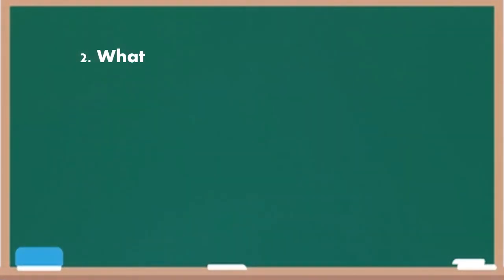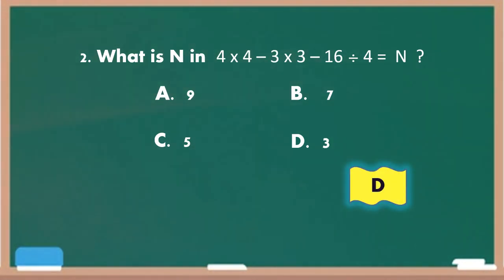Number 2. What is N in 4 times 4 minus 3 times 3 minus 16 divided by 4 equals N. Letter A, 9. Letter B, 7. Letter C, 5. And letter D, 3. Times up. The correct answer is letter D.